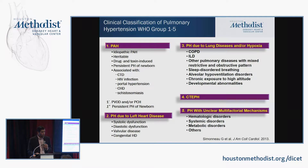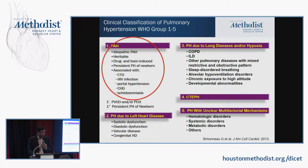The clinical classification of PH goes WHO Group 1 through 5. Group 1 is PAH, Group 2 is left heart disease, Group 3 is lung disease, Group 4 is chronic thromboembolic pulmonary hypertension, and Group 5 is unclear multifactorial mechanisms. Most approved therapies are for PAH, but the most common cause is left heart disease. For CTEPH, there is a drug approved right now.